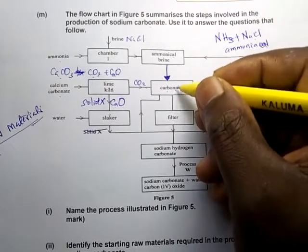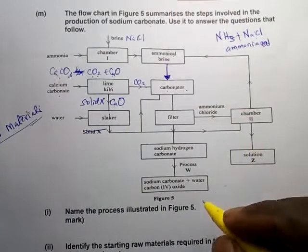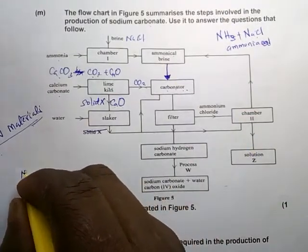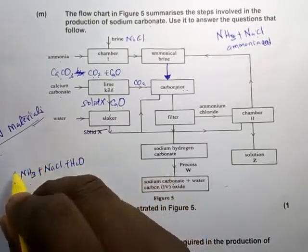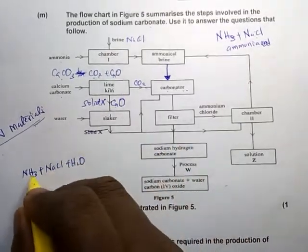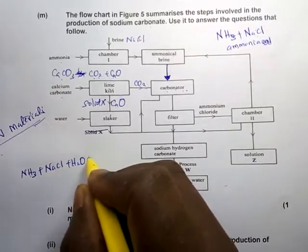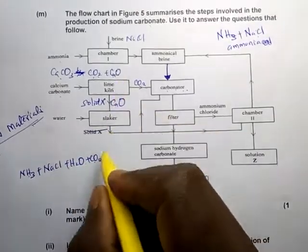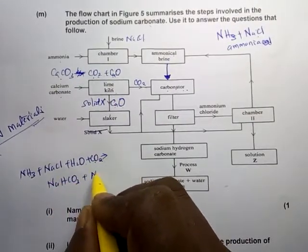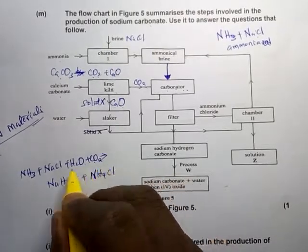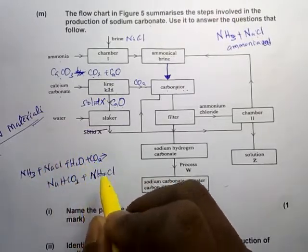The reaction that takes place in the carbonator: ammonia plus sodium chloride plus water — which is ammoniacal brine — combines with carbon dioxide from the kiln to form sodium hydrogen carbonate plus ammonium chloride. That is the overall reaction in the carbonator, but we can also write it in two separate steps.